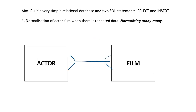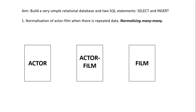Let's look again at the entity relationship diagram that corresponds to this situation. We have a crow's foot on both the actor entity and the film entity, so this is a many-to-many relationship. In this circumstance, you put another entity in between the actor and the film, and it's normally called the name of one entity dash the name of the other — so this entity in the middle is 'actor-film'. From the actor, we put a one-to-many relationship to actor-film. From film, we put a one-to-many relationship to actor-film.